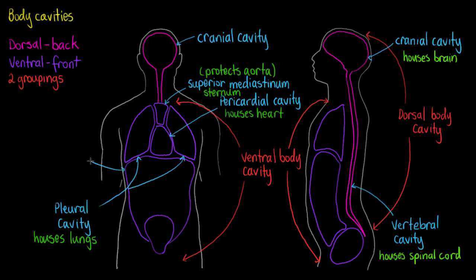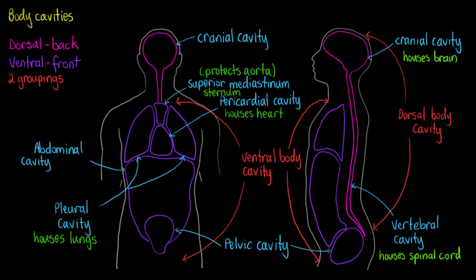We have two other subdivisions within our ventral cavities: the abdominal cavity and the pelvic cavity. These cavities house different organs and structures. Our abdominal cavity is responsible for housing and protecting our digestive viscera — so all of our intestines and our stomach. And our pelvic cavity is going to house our bladder and our reproductive organs.